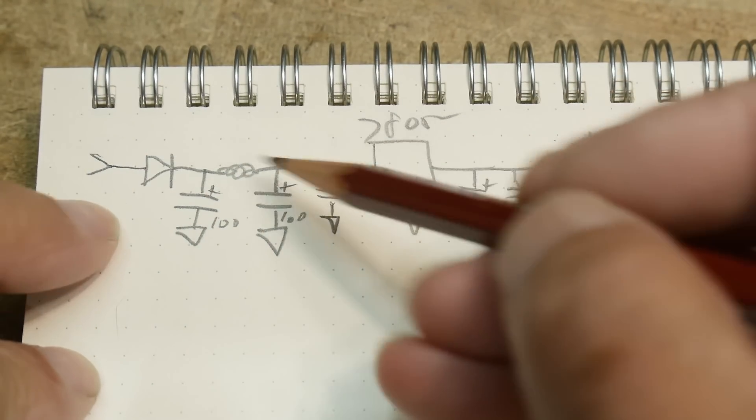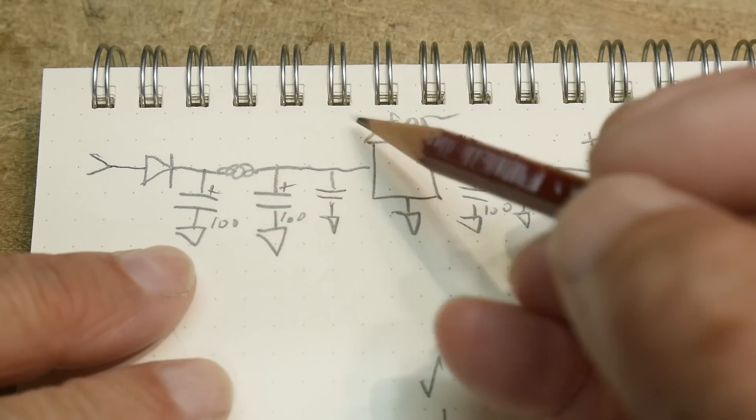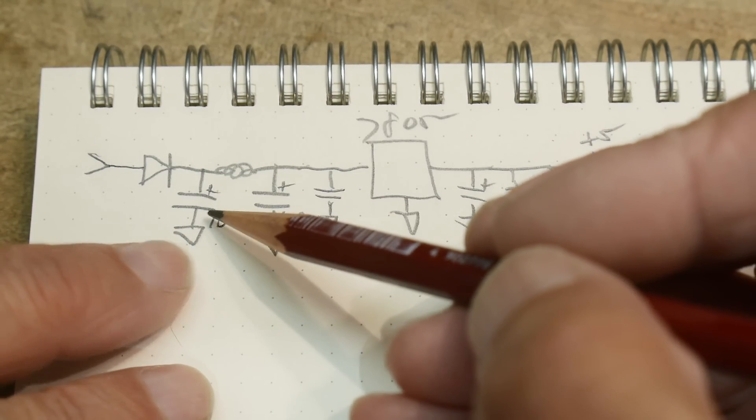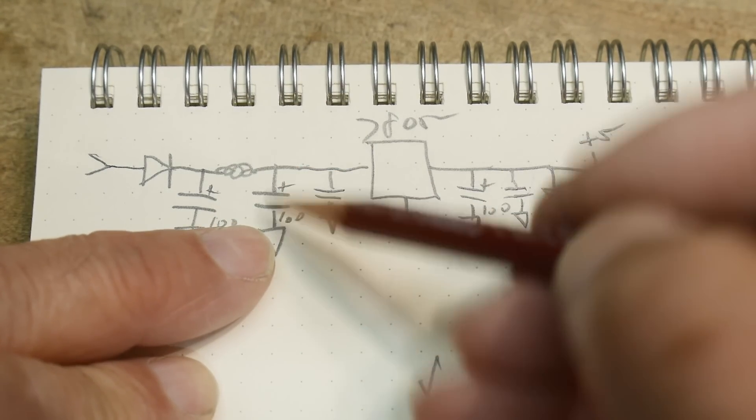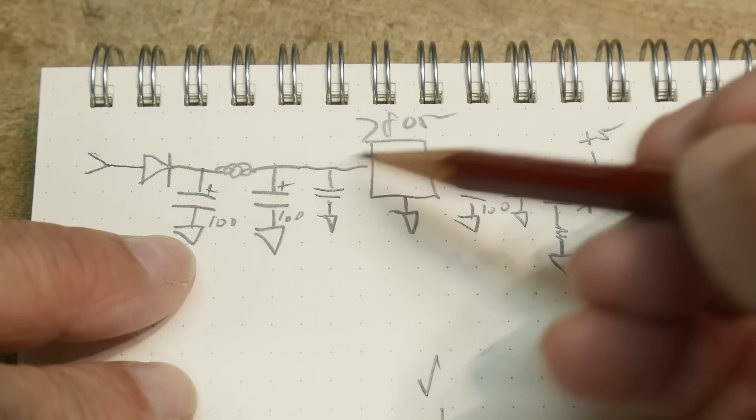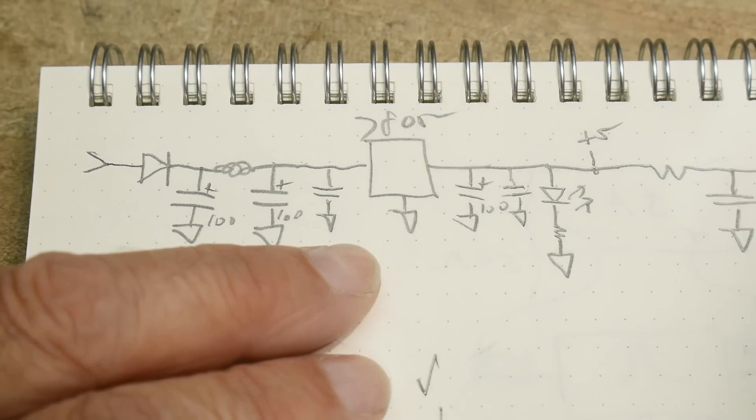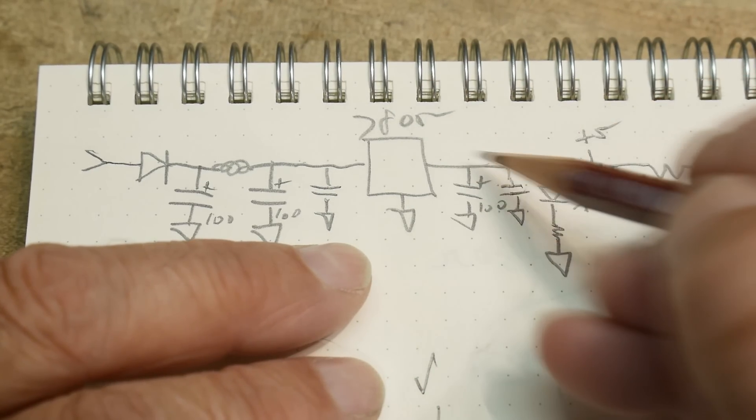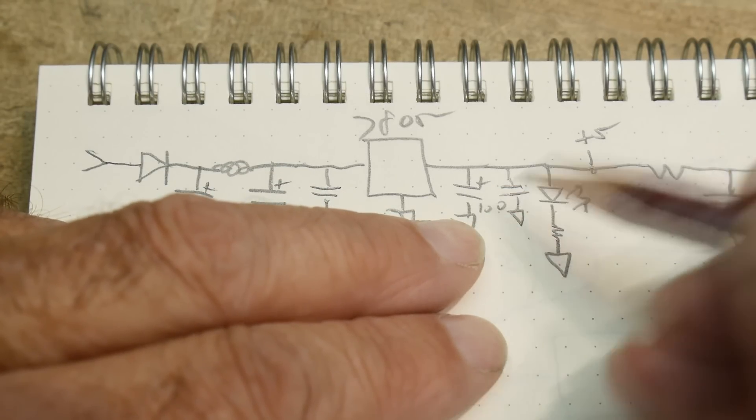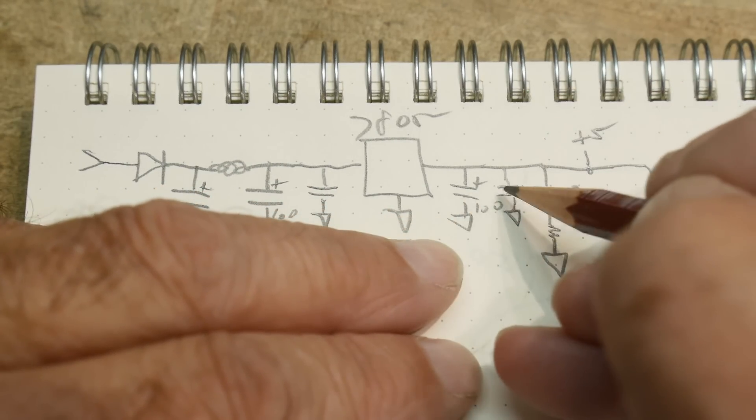So the power comes in here, diode-protected, gets filtered, actually goes through a 100 microhenry inductor. Nice pi filtering there, another little small capacitor. Then it goes into something like a 7805, gets regulated at five volts, that gets buffered with a couple, you know, a big capacitor, a little capacitor.